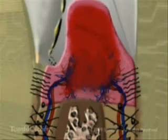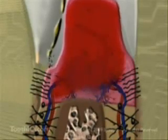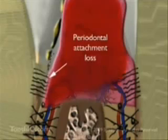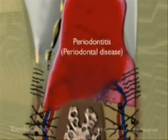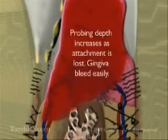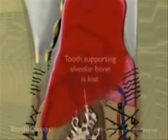Continuous exposure to acids and enzymes from plaque bacteria, and the body's immune response to them, eventually causes the periodontal attachment to be lost, an irreversible condition known as periodontitis. The sulcus depth increases to the point where the patient can no longer effectively remove plaque, leading to the destruction of tooth-supporting bone.